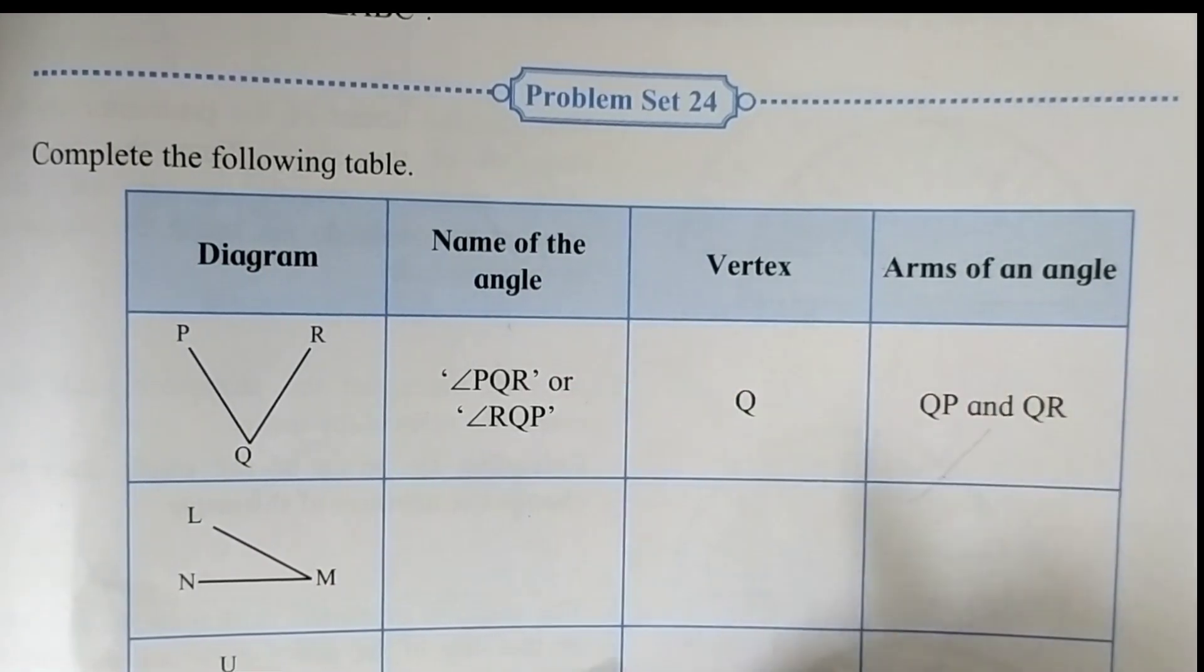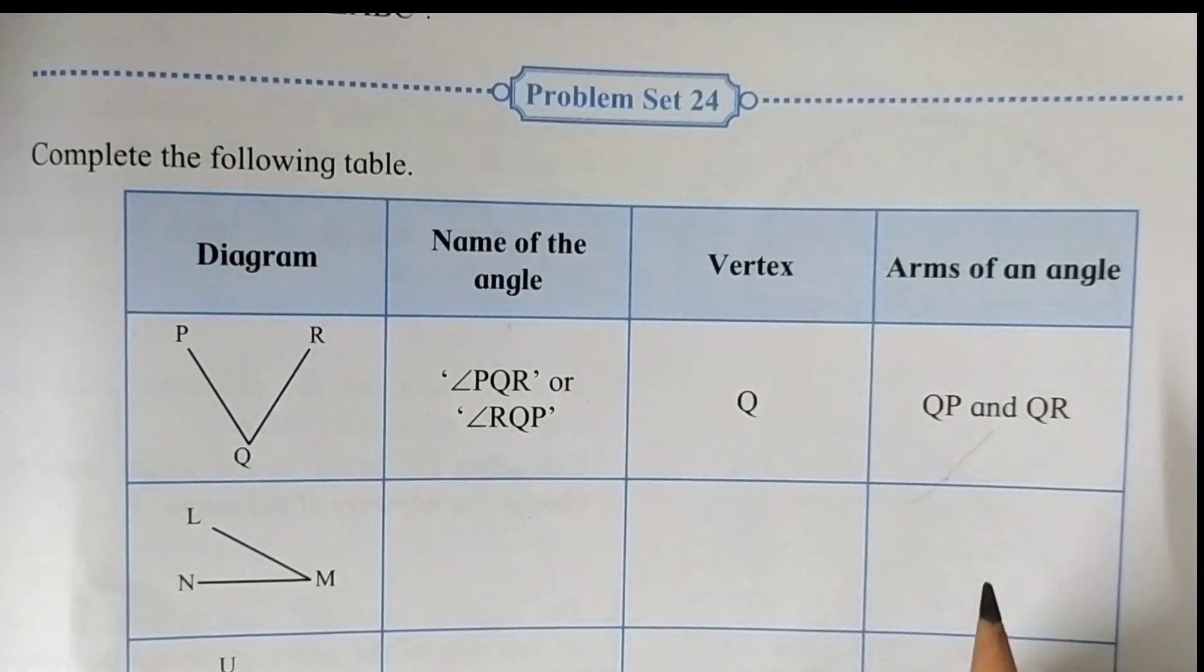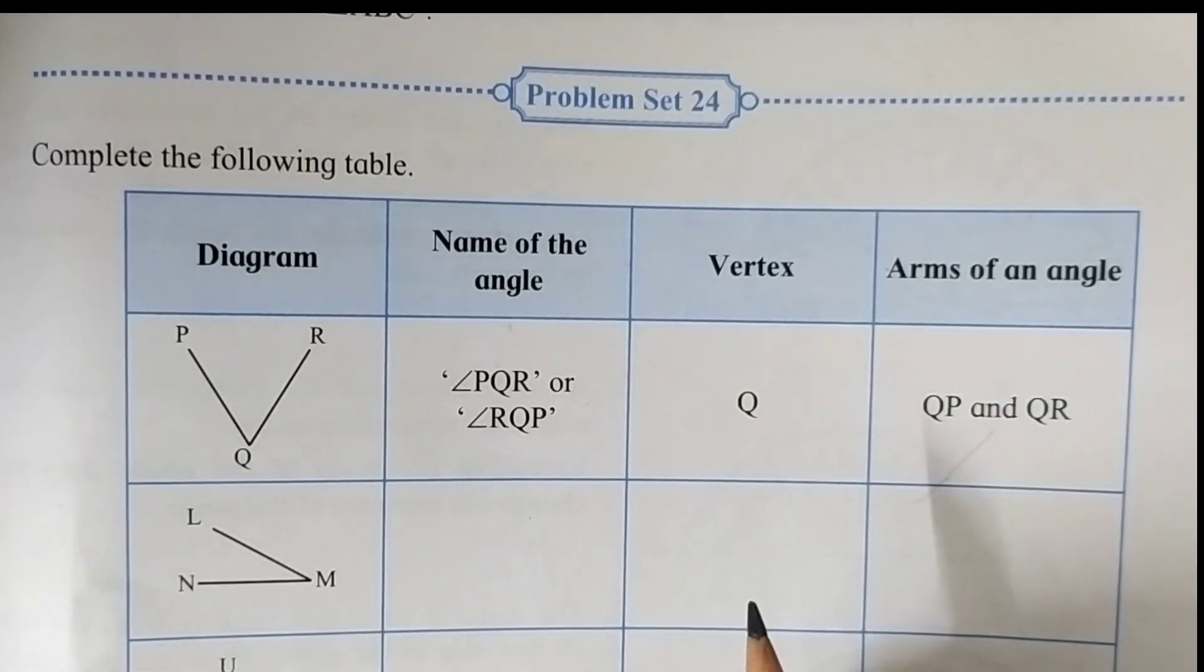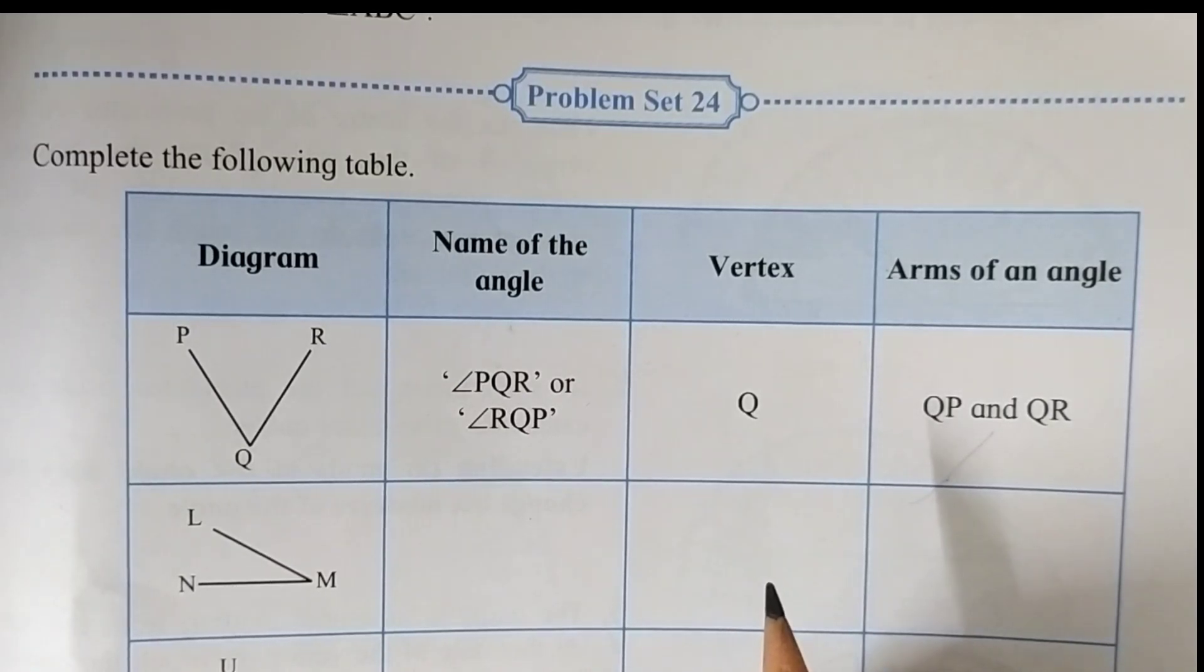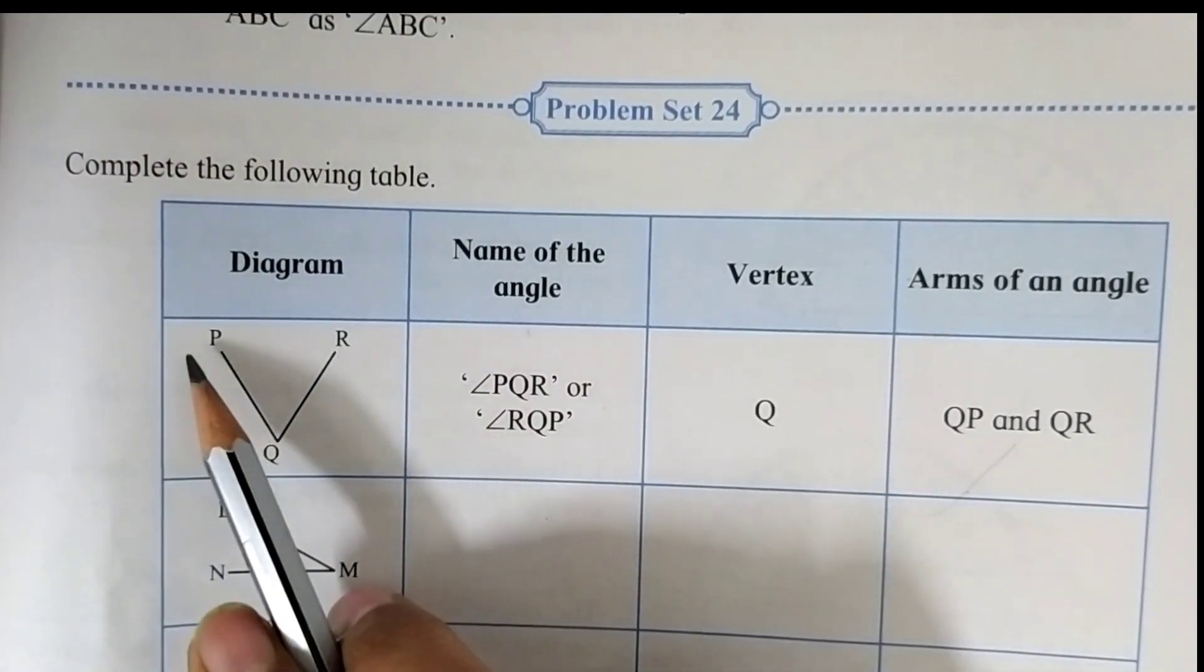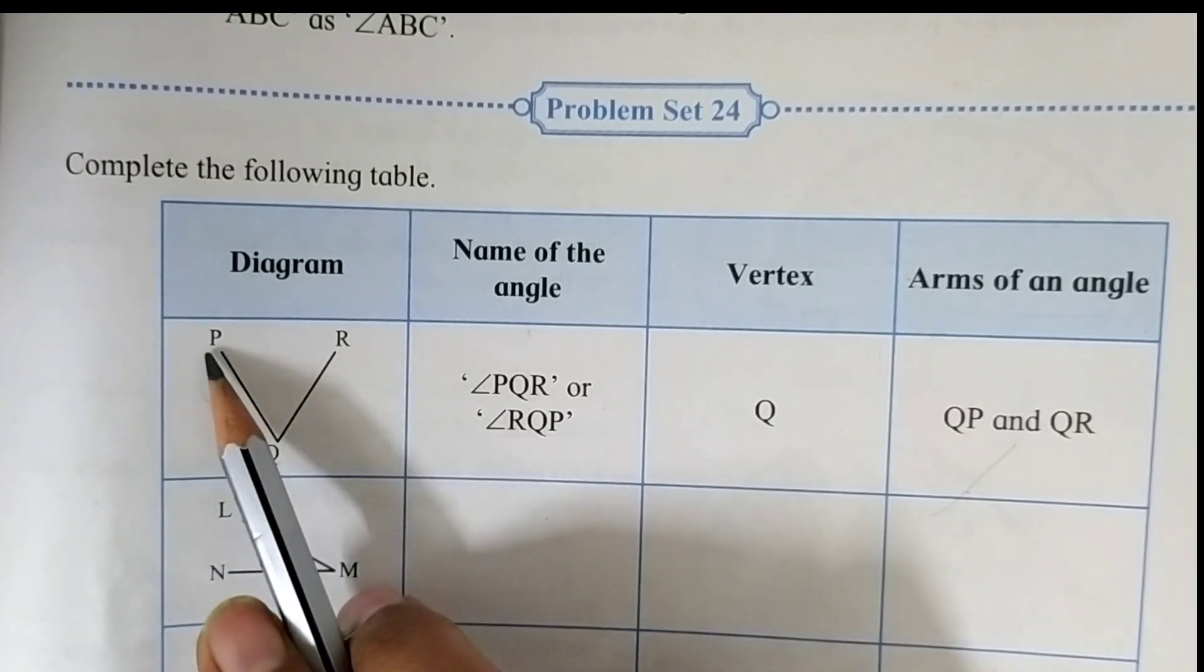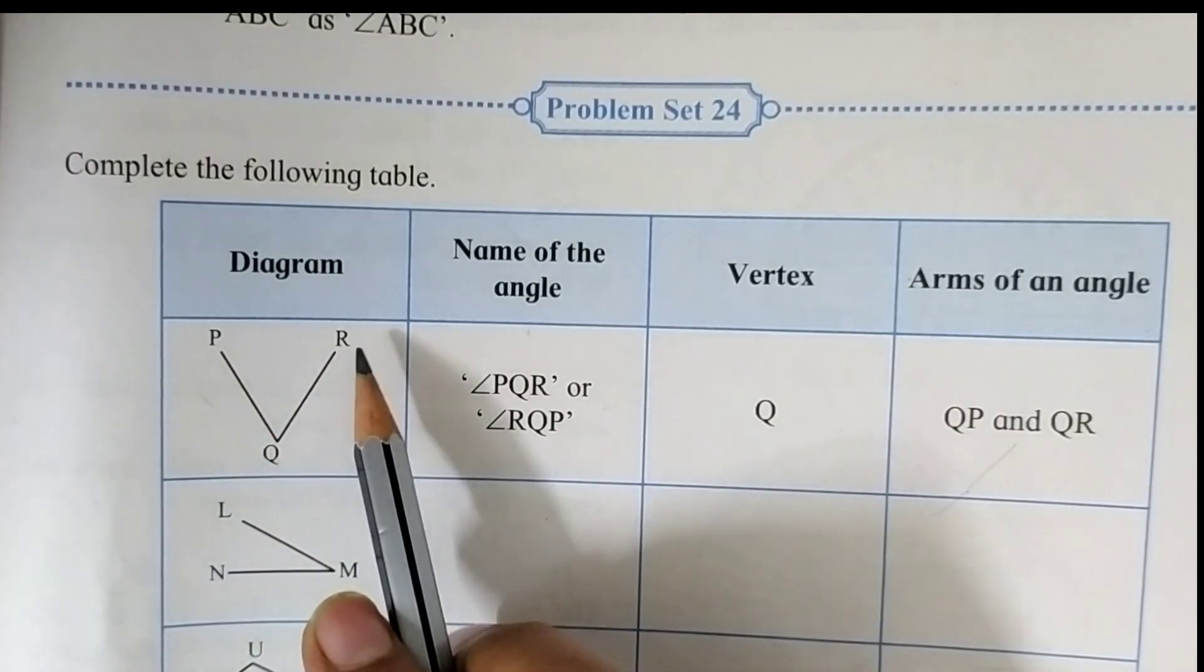I am going to show you here on my book. You have to draw this table in your notebook and then solve it. The first diagram given to us is angle PQR's diagram.